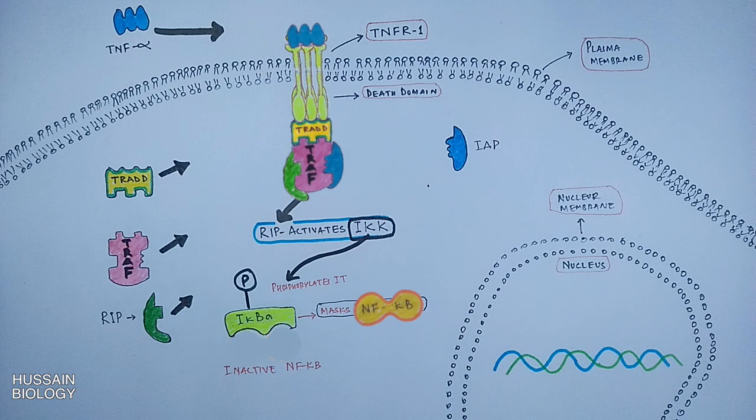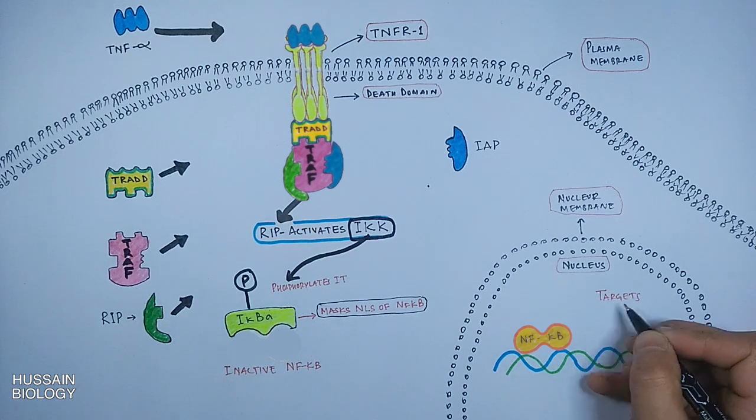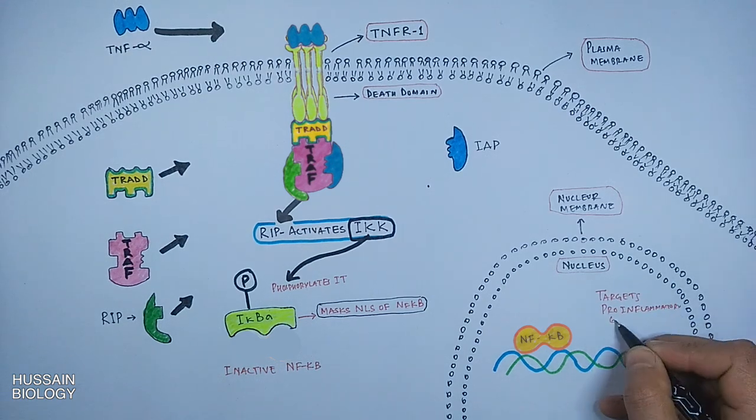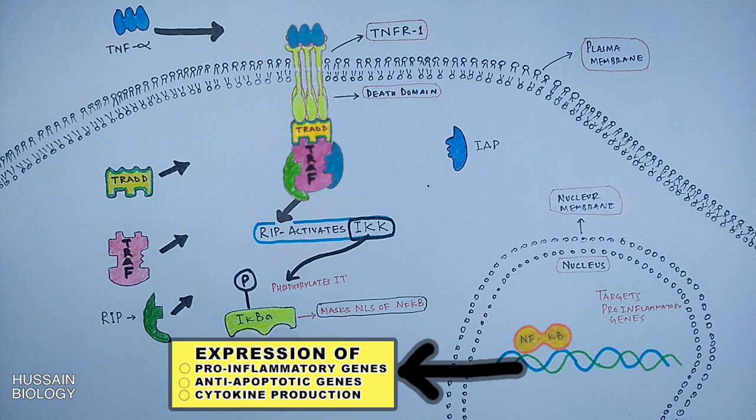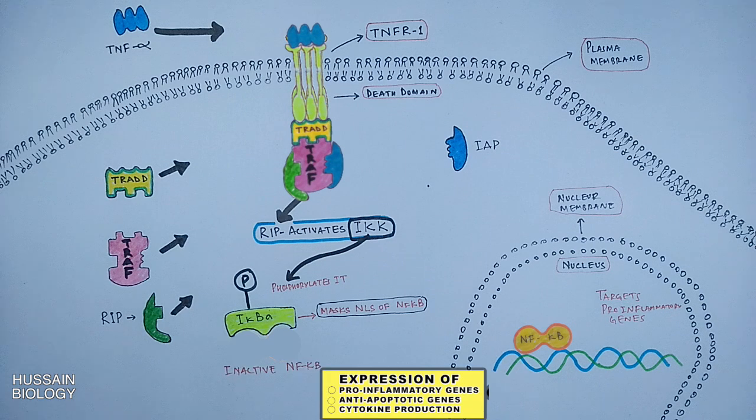It gets into the nucleus where it targets the pro-inflammatory genes and several other genes and drives the expression of these genes. We get cytokine production and other pro-inflammatory proteins, and also the expression of some anti-apoptotic genes in the NF-κB pathway. So this is how TNF-alpha initiates the NF-κB pathway.